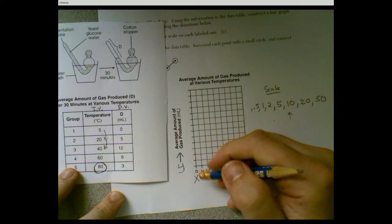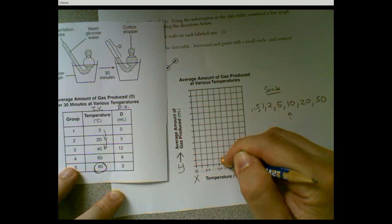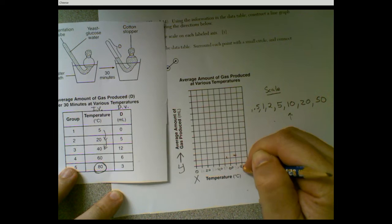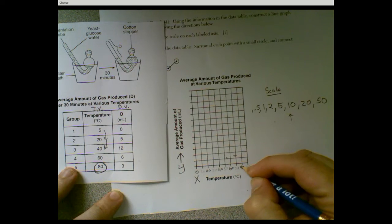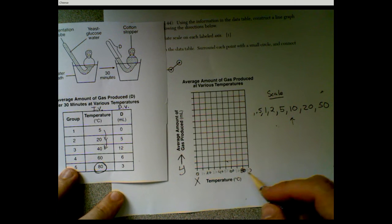You can also get away with just labeling every other. So 20, 40, 60, 80, and it's stopping there. Just make sure that you know what you're doing if you're skipping numbers. So that's a decent scale. We got to our max number.